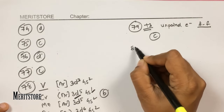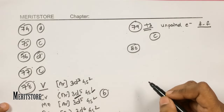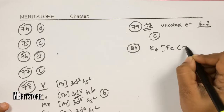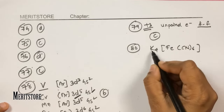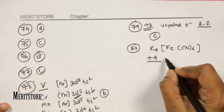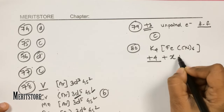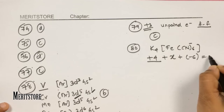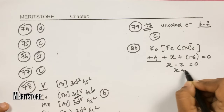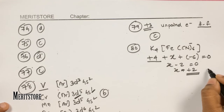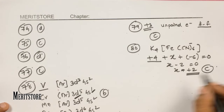Question number 80: the oxidation number of Fe in K₄[Fe(CN)₆]. Potassium is +1, so 4 K gives +4. Cyanide (CN⁻) is −1, and 6 cyanides give −6. Let Fe be X: +4 + X − 6 = 0, so X − 2 = 0, giving X = +2. The oxidation state of Fe is +2. Hence option C.